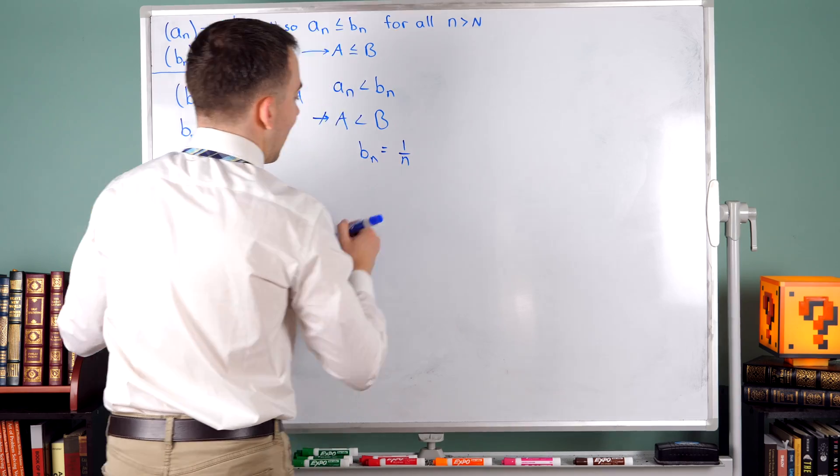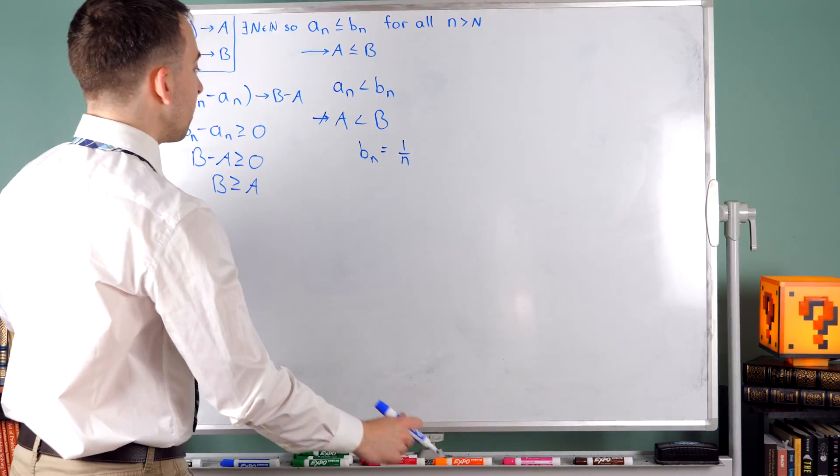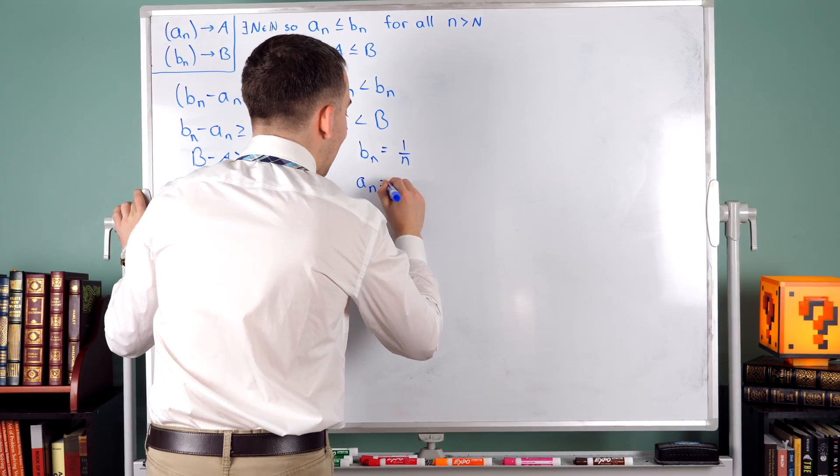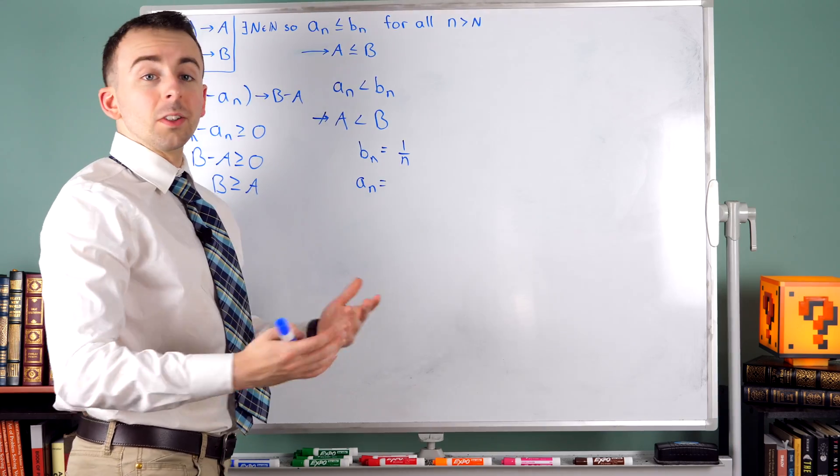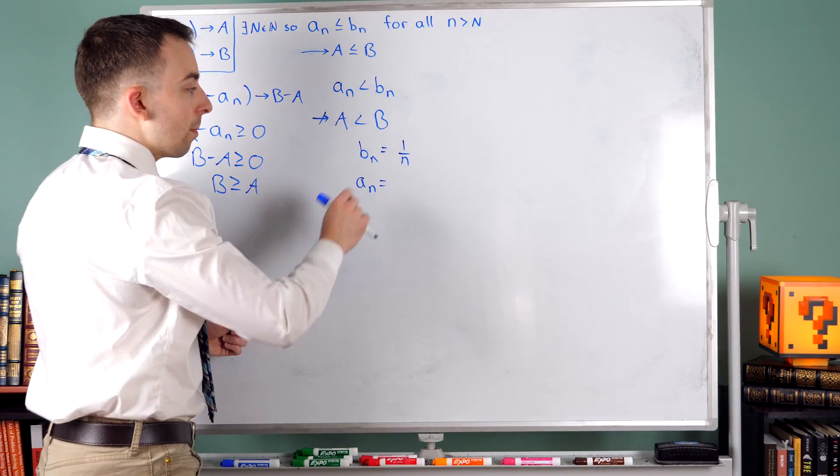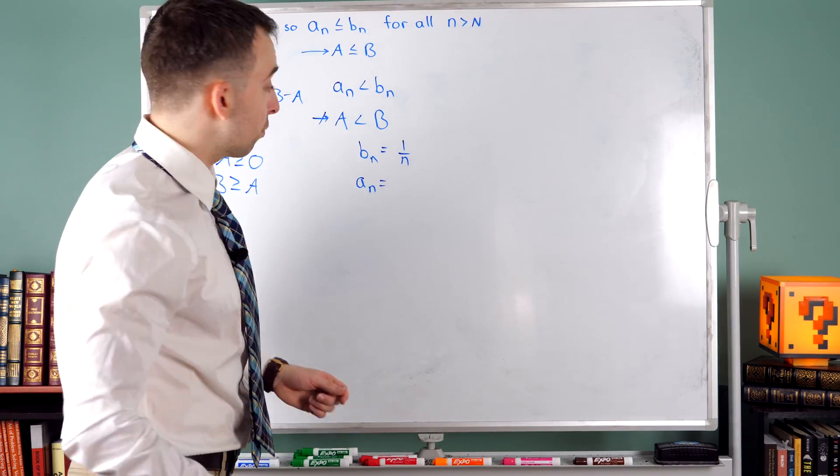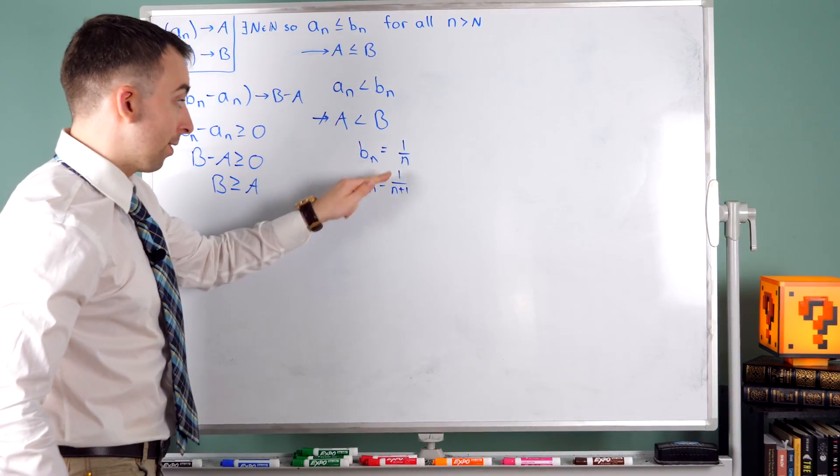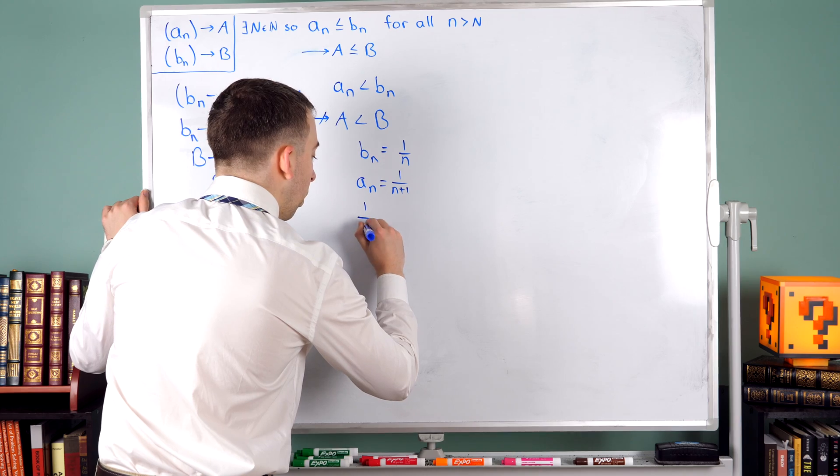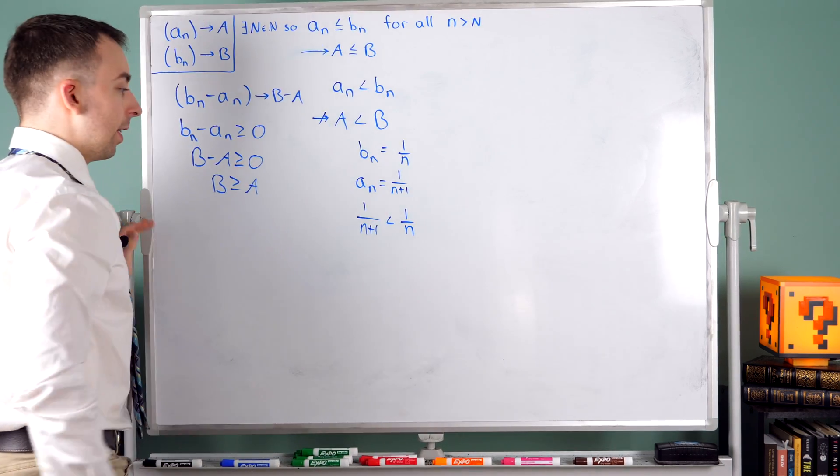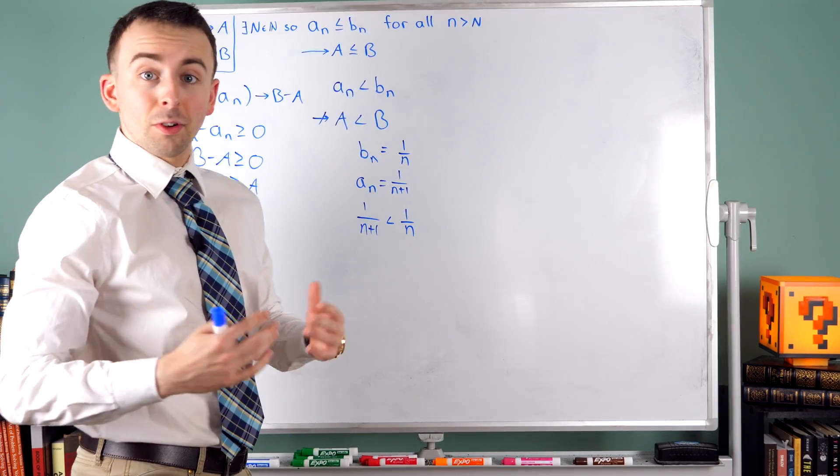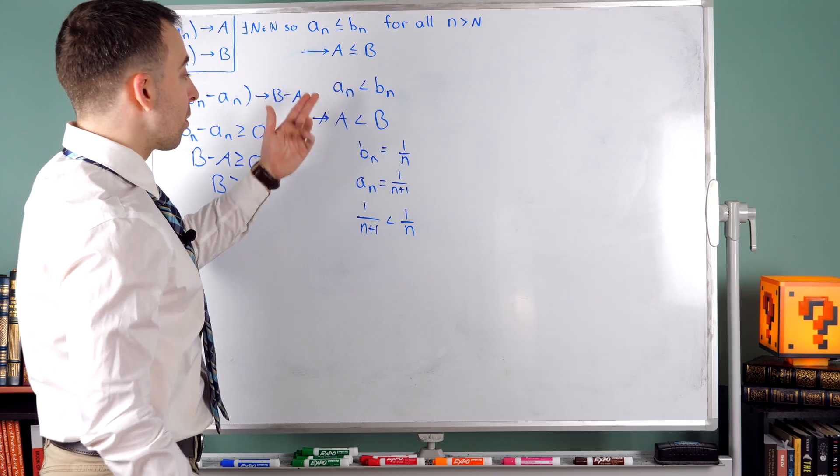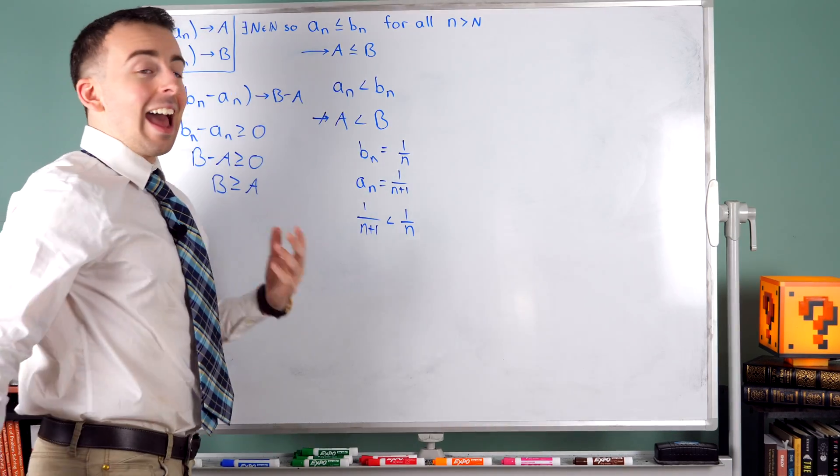Let's say that Bn is the sequence 1 over n. In this case, obviously, Bn converges to zero. Now, what could we do to this sequence to get a new sequence, An, so that every term of An is less than Bn, but An clearly has the same limit? Well, if we just made this denominator a little bit bigger, we would make the terms a little bit smaller, because dividing by a bigger number gives a smaller number. So let's say that An is 1 over n plus 1. Just make the denominator a little bit bigger. And clearly, every term 1 over n plus 1 is going to be less than 1 over n. But the limit of this sequence is certainly zero, and the limit of this sequence is certainly zero. So every term of An being less than every term Bn does not imply that their limits have that same relation.